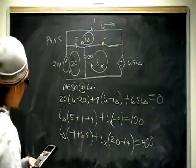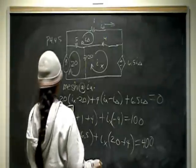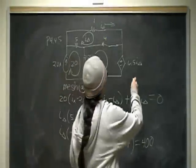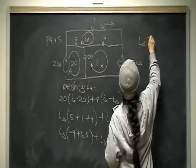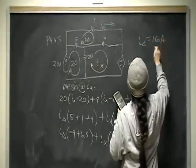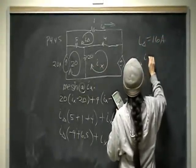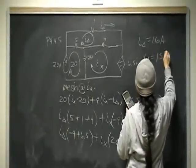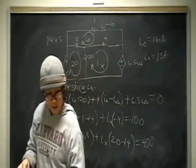So this is telling me that I delta is 16 amps. Yes. So I delta is 16 amps, and Ix is equal to 15 amps. And that is what I got before.